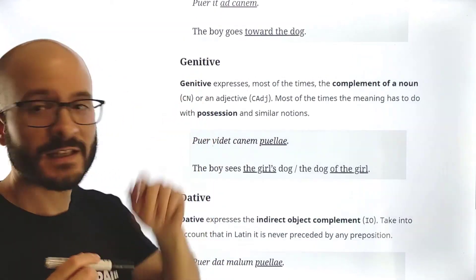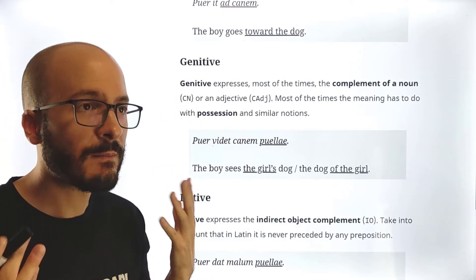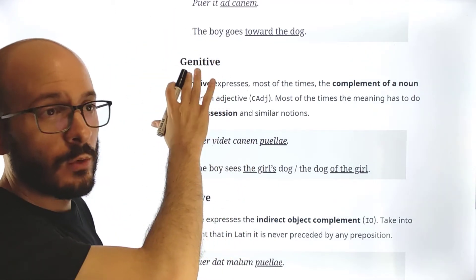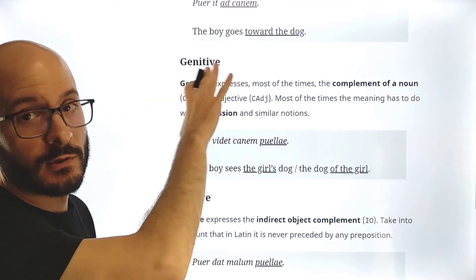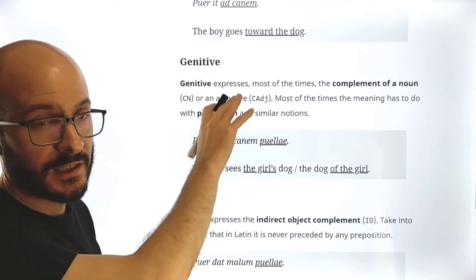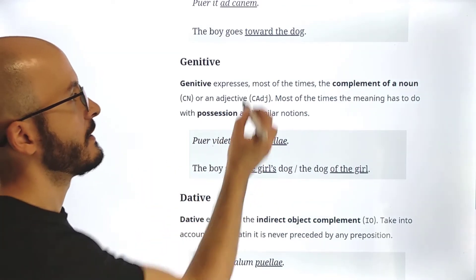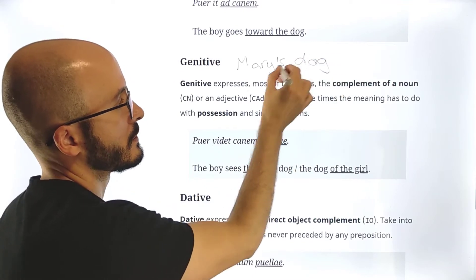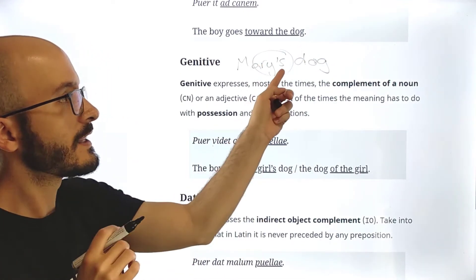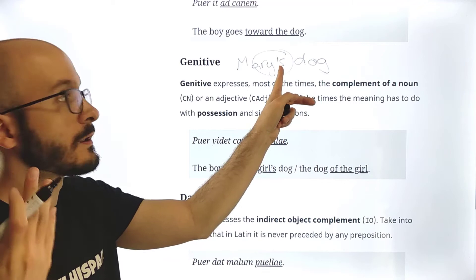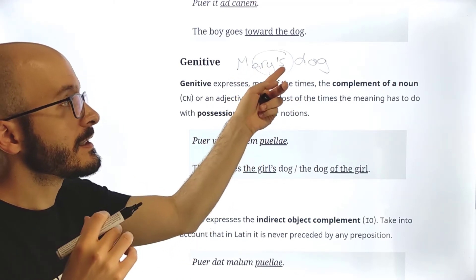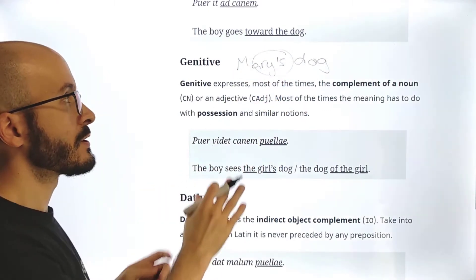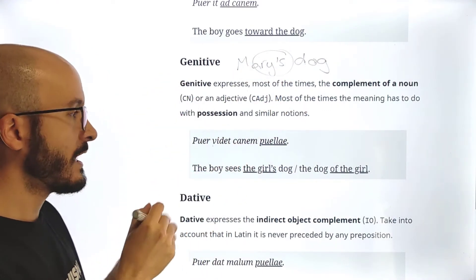The next case is the genitive case. And if you know some English grammar, which I recommend, you might know at least the name of this Saxon genitive. And what is this Saxon genitive? So for example, if I say Mary's dog, so this is the Saxon genitive. So this genitive thing is to say this belongs to this. So that's pretty much what we have in Latin.